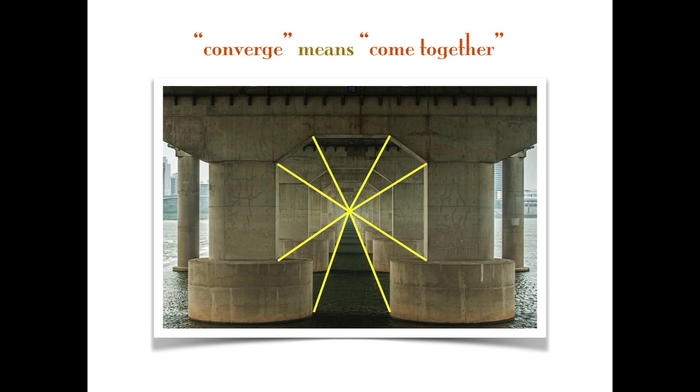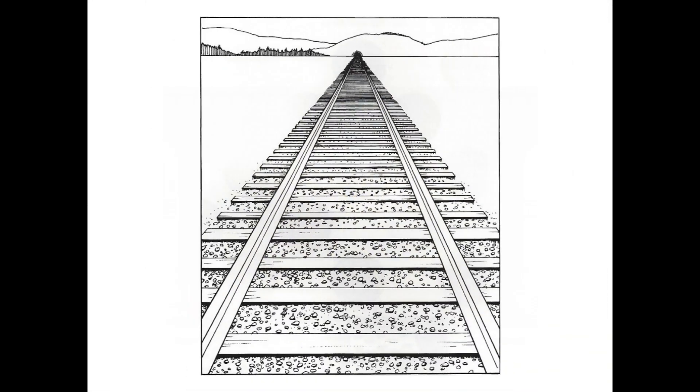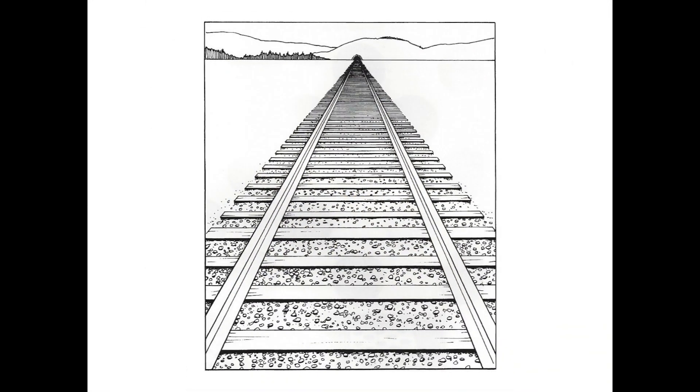If you think about the example of railroad tracks, we know that the metal rails are parallel, which means that they never actually meet. But if you look at them going off into the distance, it looks like they meet at a point way off up ahead. And so here in this example, the railroad tracks would be the converging lines.